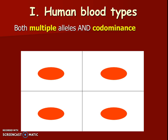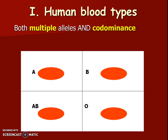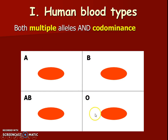I'd ask that you draw this image of a box with circles in them. These ovals represent the different types of red blood cells that could exist in your body. Here are our different blood types: we can have blood type A, blood type B, blood type AB, and blood type O.